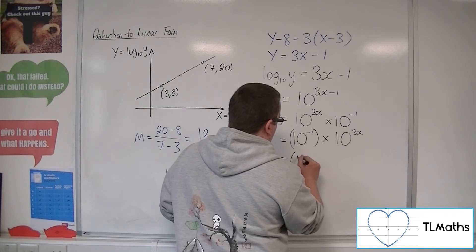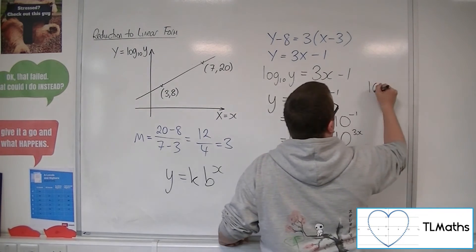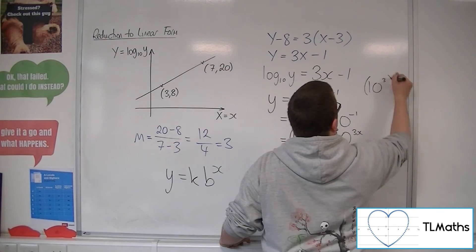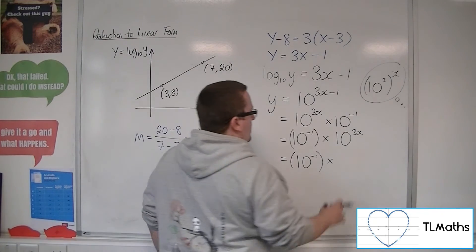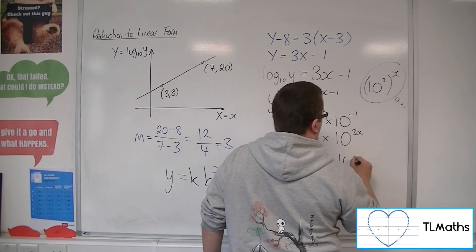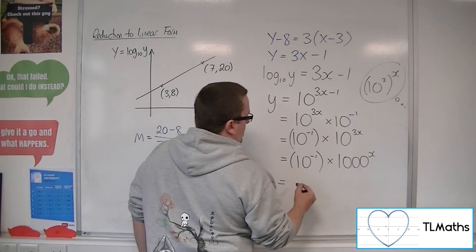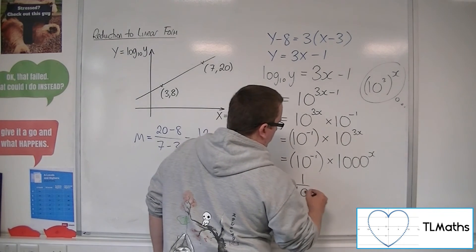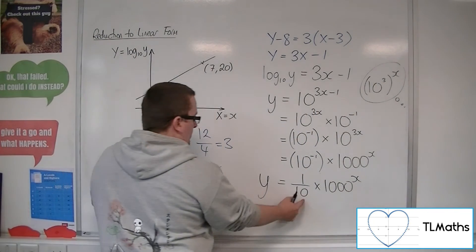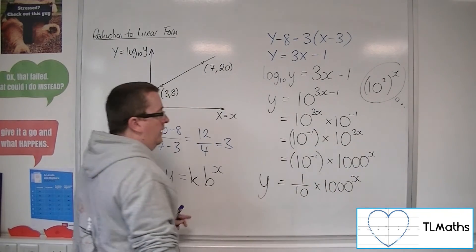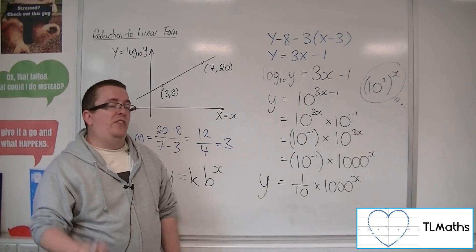So let's use a bit more indices knowledge here. So 10 to the 3x is the same as 10 cubed to the x. That's my thinking. So actually, this can be written as that, which is 1,000, because that's 10 cubed to the x. So if I write it as y equals 1 tenth times 1,000 to the x, I have it in the form of k times b to the x. And this is the equation of the curve that fits the original data.